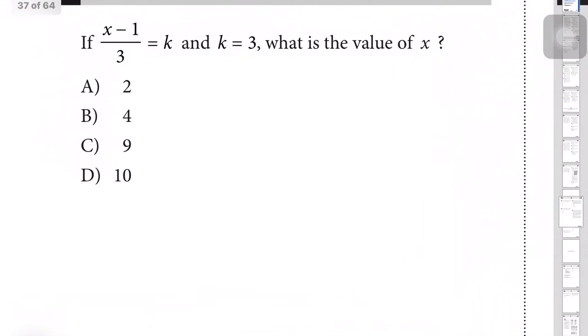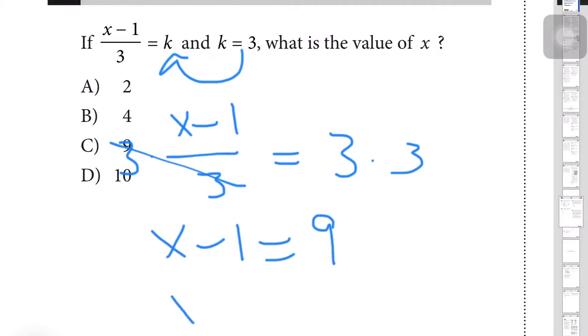We're going to be looking at question 1: (x - 1)/3 = k, and k = 3. What is the value of x? For this question we just substitute what k equals, which is 3. So you rewrite your equation as (x - 1)/3 = 3. Multiply by 3 on both sides: x - 1 = 9. Add 1 to both sides to isolate the x, and you get x = 10, which would be D.